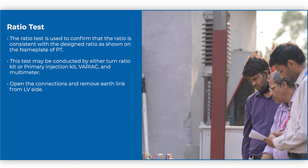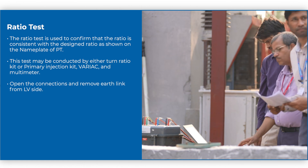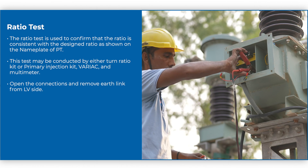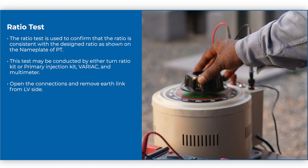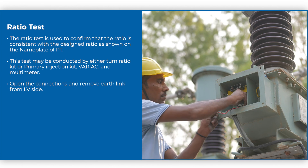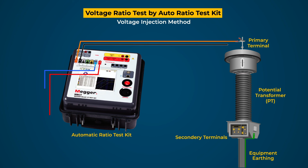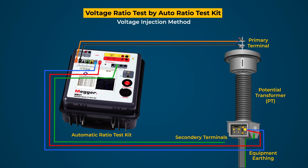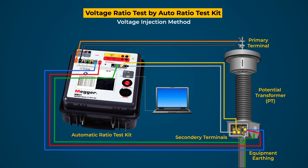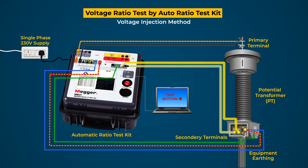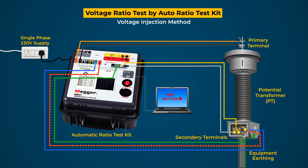Ratio test: The ratio test is used to confirm that the ratio is consistent with the designed ratio as shown on the nameplate of the PT. This test may be conducted by either a turn ratio kit or a primary injection kit, variac, and multimeter. Open the connections and remove the earth link from the LV side. For the auto ratio test kit method, connect the primary injection leads of the test kit to both primary terminals and connect the earth terminal of the test kit to PT earthing. Connect the secondary leads to the secondary winding terminals. Connect the single phase 230 V AC supply to the test kit. Apply the test voltage across the primary terminals; the kit measures the induced voltage in the secondary winding and calculates the ratio and percentage error of the PT. Record the displayed value and compare with the designed ratio. If found beyond the permissible limits, take corrective actions.